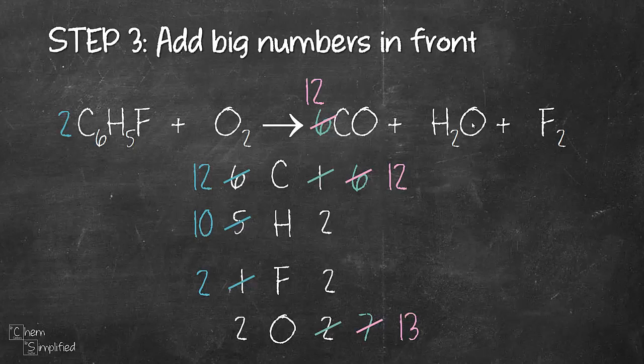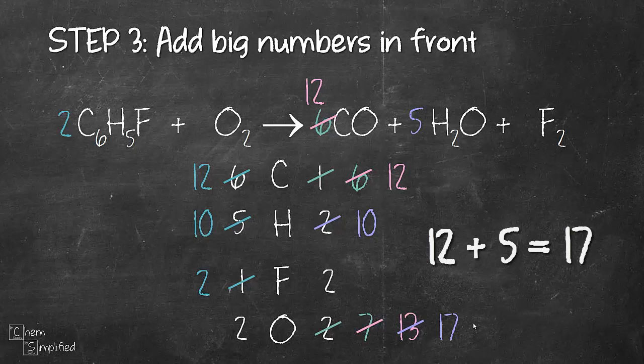Okay, so carbon looks good. Now we're going to move on to hydrogen. So on the left hand side we have 10, on the right hand side we have 2, like what we planned earlier. We're going to put a 5 in front of H2O. So that will give us 10 hydrogen and since we place a 5 in front of H2O, that's going to affect the number of oxygen as well. So that's going to be 17. So we have 12 O plus 5 O, so that will give us 17. For now our carbon, hydrogen and fluorine looks pretty good. They're all balanced on both sides and that brings us to oxygen.